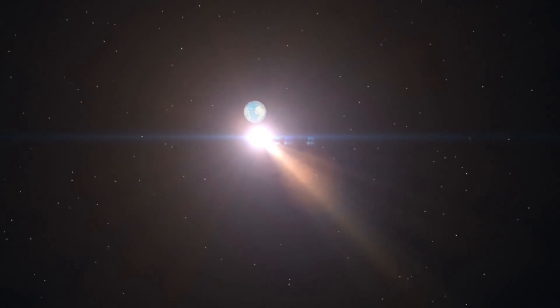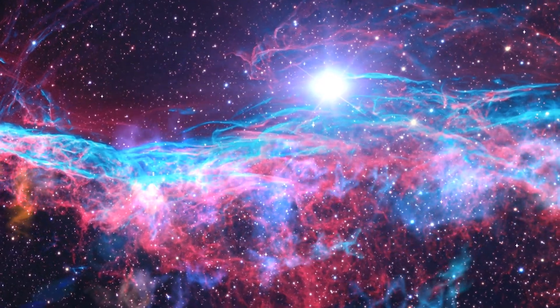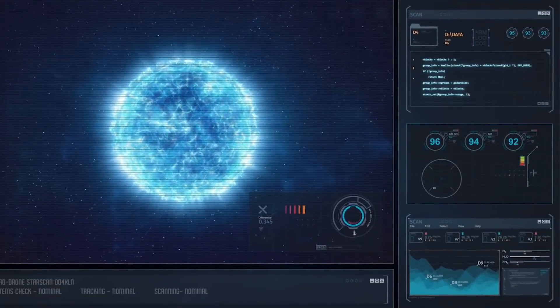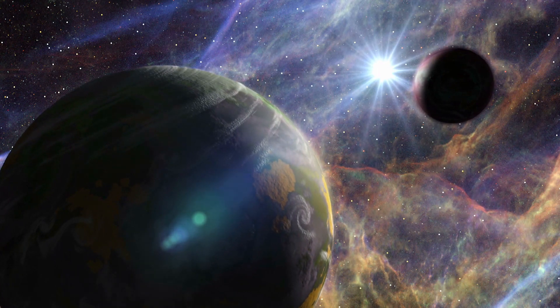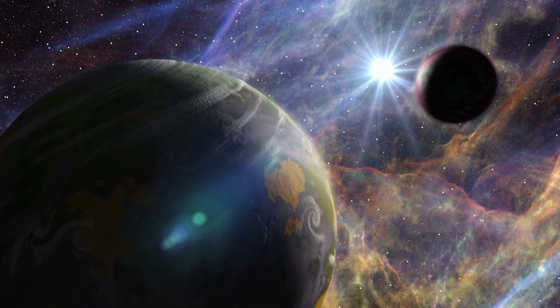According to Hubble and ALMA's findings, 2I/Borisov has a higher carbon monoxide content than most comets in the solar system. Borisov is drifting away from our Sun quickly and will eventually re-enter interstellar space, never to return again.